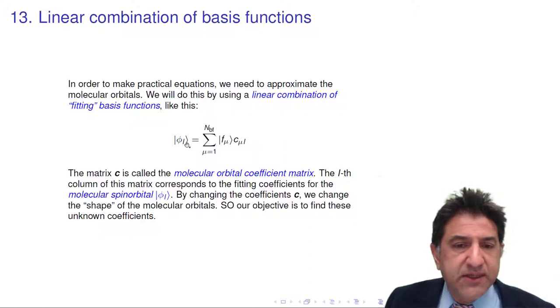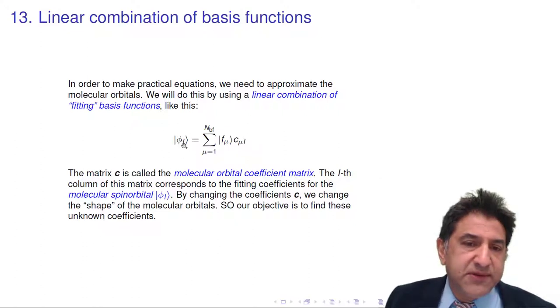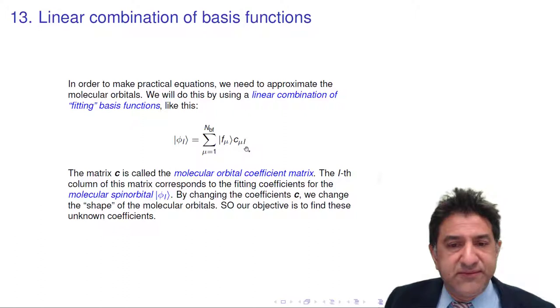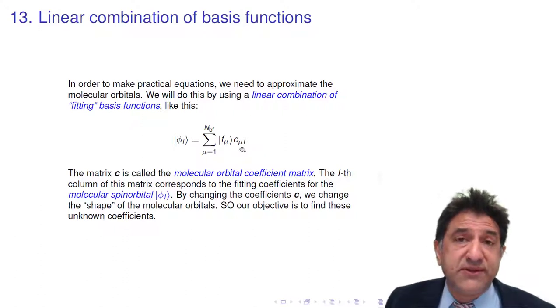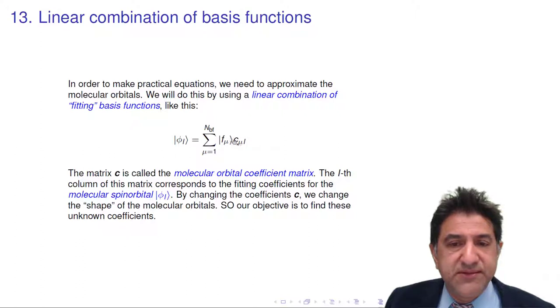So for every orbital i, we have a series of fitting coefficients. For i equals 1, for the second orbital phi 2, we have another set of fitting coefficients different to the first, and for the third and for the fourth. So this set of coefficients here is called the molecular orbital coefficient matrix.